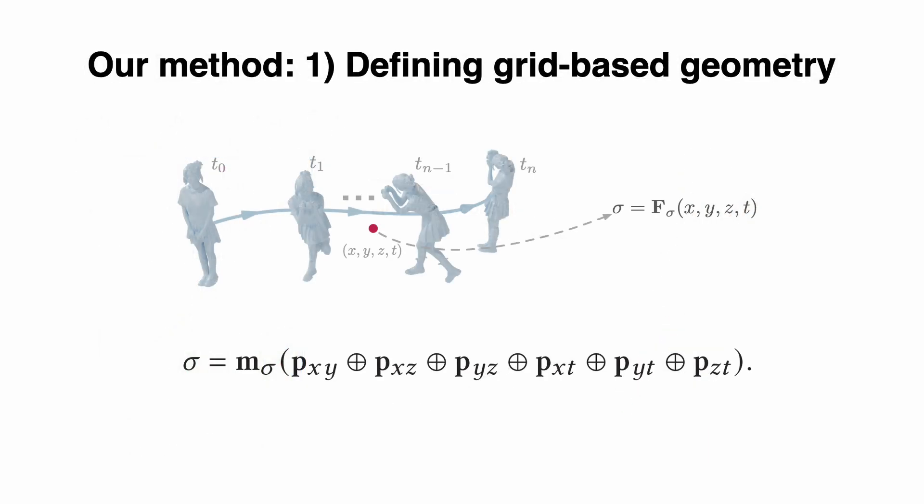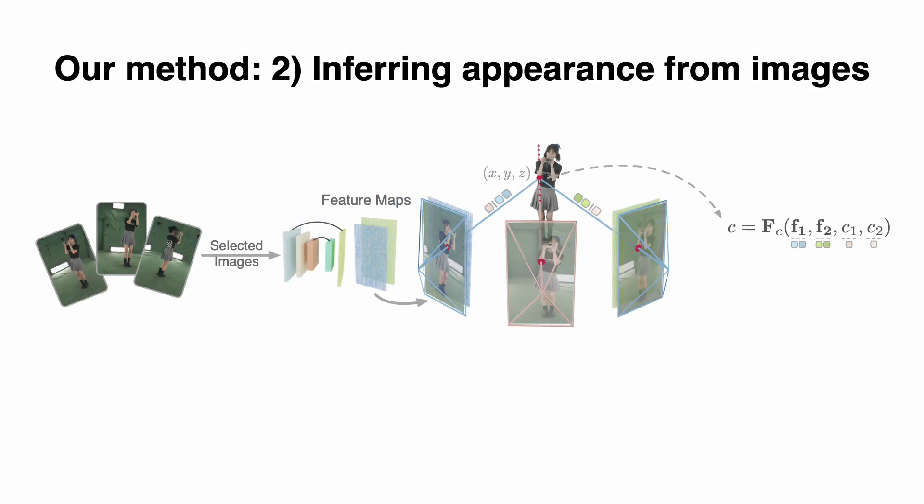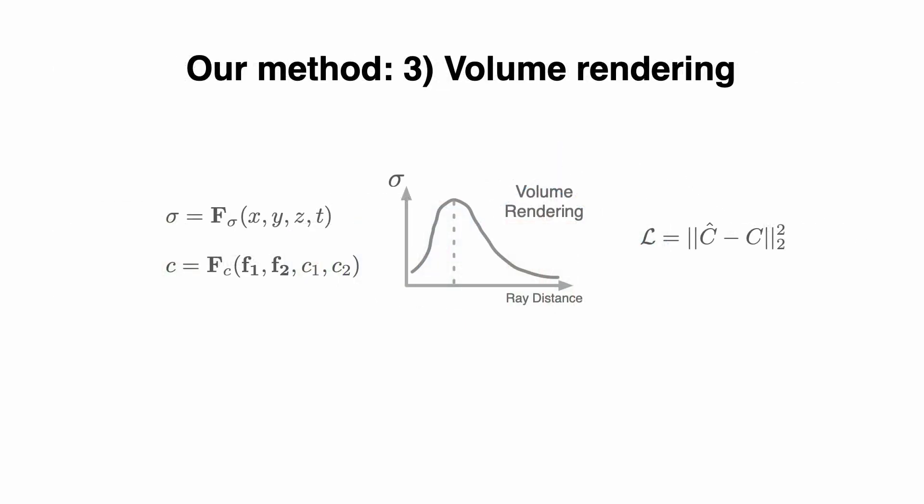Specifically, we represent the geometry as a continuous function F-Sigma, which takes X, Y, Z, T as input. In practice, we implement F-Sigma as a multi-layer perceptron M-Sigma with six feature grid planes. To render images from a new space-time viewpoint, we first select several nearby input images at that moment and use a 2D convolutional neural network to extract their features. Then, we map 3D points to these views and use bilinear sampling to sample features from the feature maps. Finally, we employ a small multi-layer perceptron to predict the color of this point. Given density and color fields, we use volume rendering to render an image.